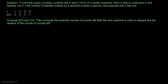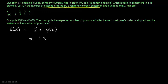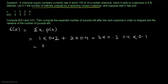x is a random variable equal to the number of batches ordered by a randomly chosen customer. The company has 100 pounds in stock and sells in lots of 5 pounds. The expected value of x equals the summation of x multiplied by P(x), which is 1×0.2 + 2×0.4 + 3×0.3 + 4×0.1 = 0.2 + 0.8 + 0.9 + 0.4 = 2.3.